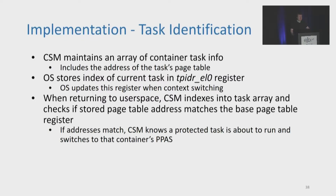When interposing on context switches, the CSM needs to identify what task was previously running and what task is going to run once control is returned to user space. To achieve this, the CSM maintains an array of info on all tasks in protected containers, and requires the OS to store the index into this array of the current task in the generally unused TPIDR_EL0 register. Before the CSM returns control to user space, it uses this index to retrieve information on what task is supposedly about to run, notably comparing the stored address of that task's page table with the address in the base page table register. If they match, the CSM knows that a protected container task is about to run and switches to that container's protected address space.